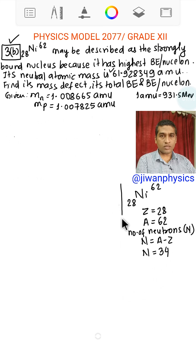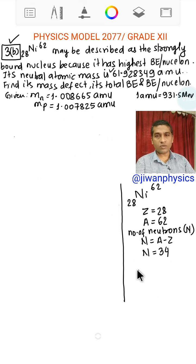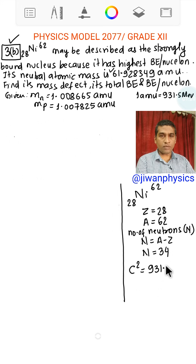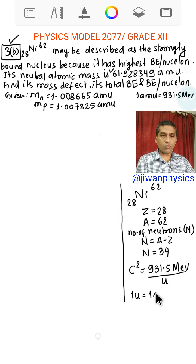Let me put this in a box and we use a very important conversion factor. C squared equals 931.5 mega electron volt per U, and 1U equals 1 AMU equals 931.5 mega electron volt.